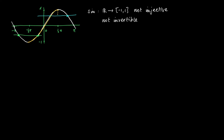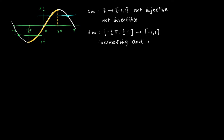So now we reconsider the function and restrict the domain to [-π/2, π/2]. If we do so, we see that we actually have a strictly monotonically increasing function, as indicated by the yellow line. So the sine defined on the domain [-π/2, π/2] is an injection and therefore it has an inverse. This inverse function is called the arc sine.